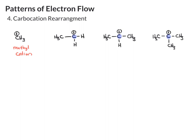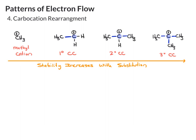A carbon that has one carbon attached is a primary carbon, so this is a primary carbocation. If the carbon has two carbons attached, this is a secondary carbocation. And if it has three carbons attached, it's a tertiary carbocation. What we find is that as we go from the methyl to the tertiary, we're increasing in stability. Stability increases with substitution at the carbocation carbon.